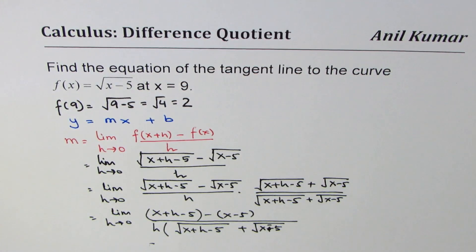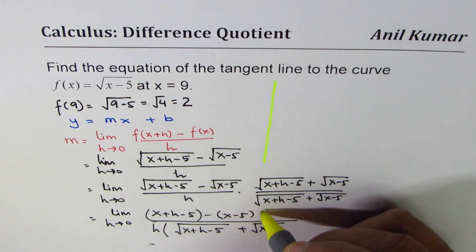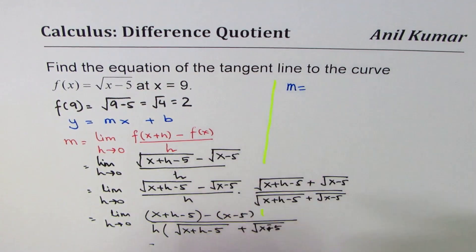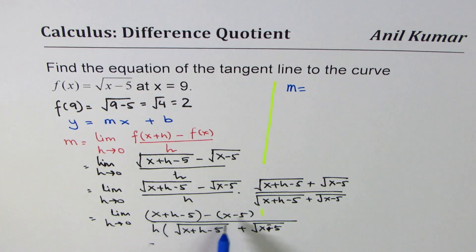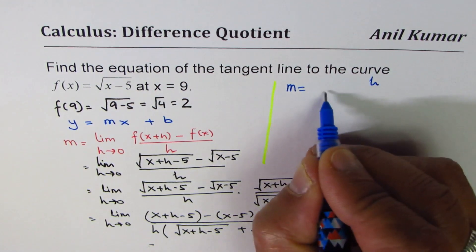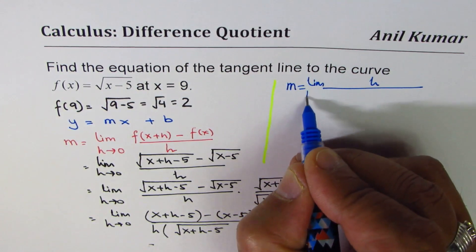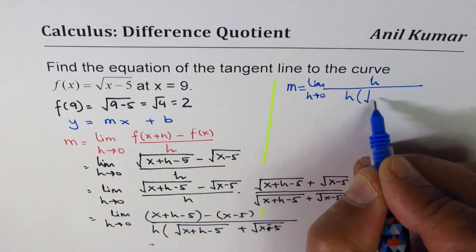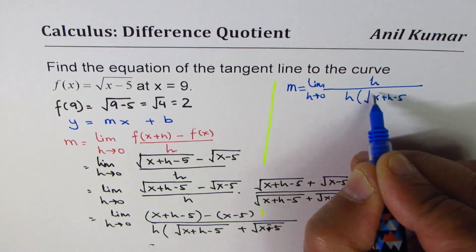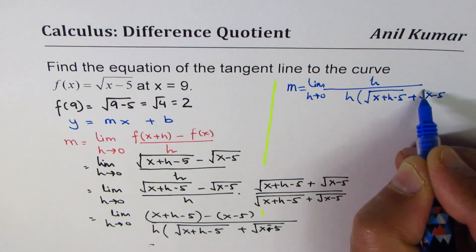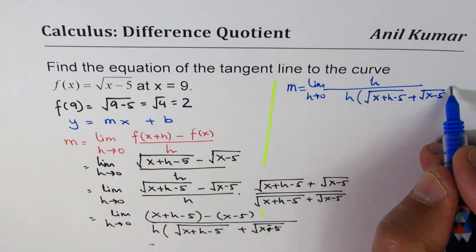Now, let's take it to the right side and solve it further. Since we're running out of space here, I'm going to use more space. Let's change the ink. So we have m equals numerator, as you can see, x minus x is 0, minus 5 minus 5 is 0. We're left with h on the top. And the denominator is limit h approaches 0, h times square root of x plus h minus 5 plus square root of x minus 5.